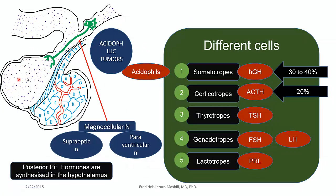Moving to the posterior pituitary, one big point to remember is that posterior pituitary hormones are synthesized in the hypothalamus. They are released from the posterior pituitary, but they are not synthesized there. This is where we have the neuroendocrine effect — these hormones are synthesized in the hypothalamus, transported in the axoplasm, and released into the posterior pituitary, where they are secreted into the blood circulation to bring about effects elsewhere.